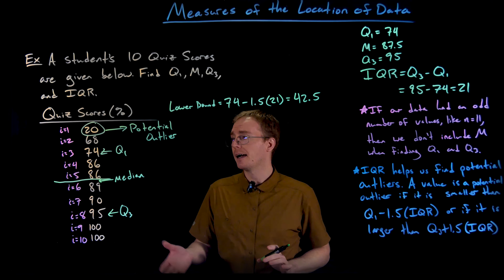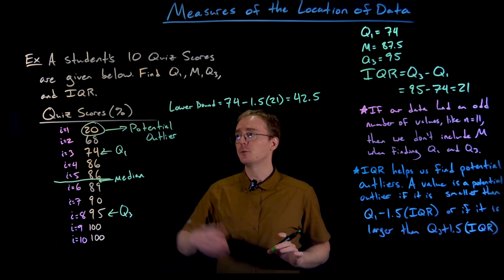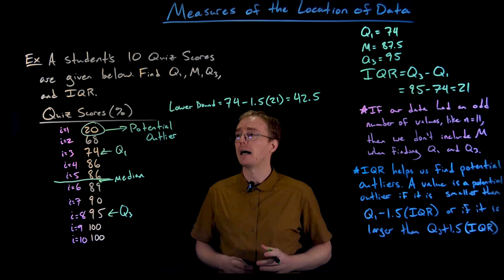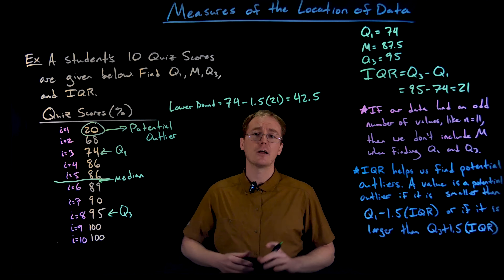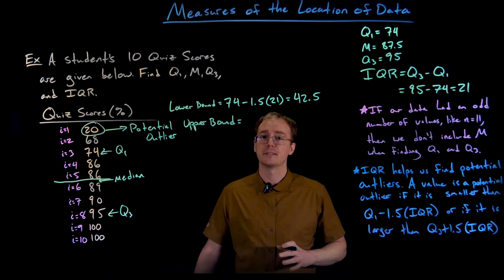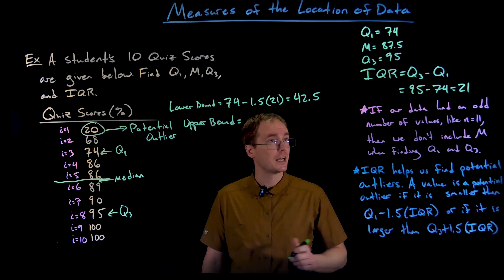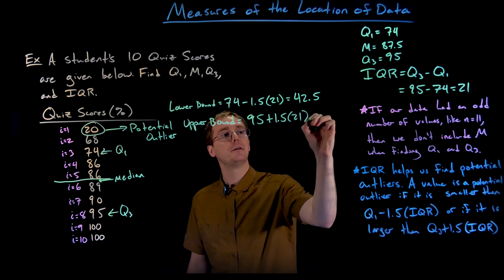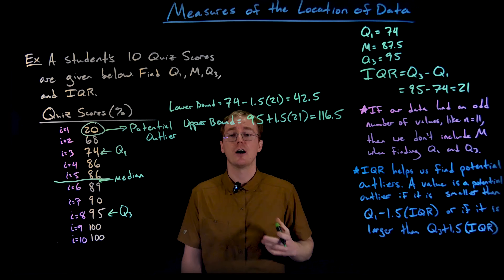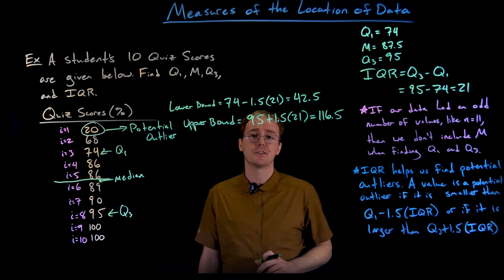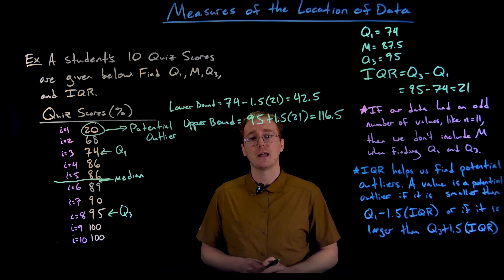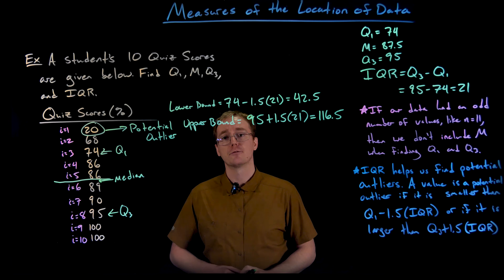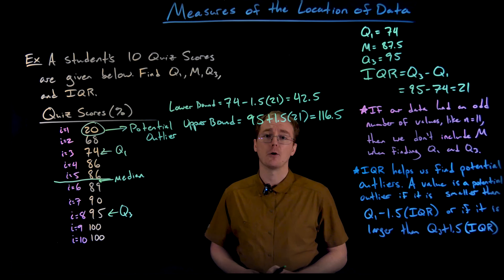That probably doesn't come as a surprise — our intuition says the score of 20 looks unusual, not nearly as close to the other data values. But this process helps us quantify that intuition and will help in situations where intuition is wrong. The upper bound for potential outliers is Q3 plus 1.5 times IQR: 95 plus 1.5 times 21 equals 116.5. Any quiz score higher than 116.5 would be a potential outlier, but we have none in our list — and it's essentially impossible to score above 100%. So we had one potential lower outlier in this data set.